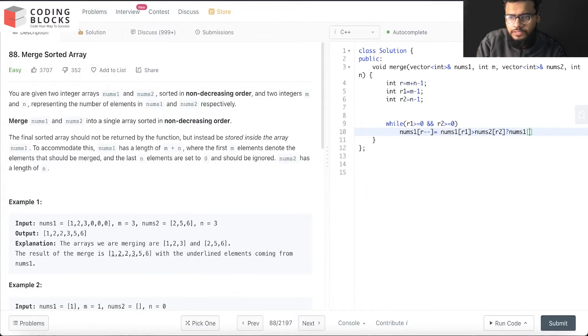minus minus. This will be nums - I'll just copy this - this will be nums2 and r2. And semicolon. Finally, for r2 less than equal to 0, and nums1